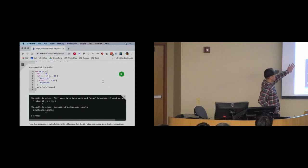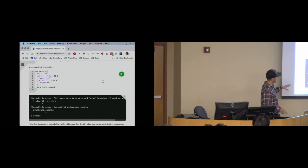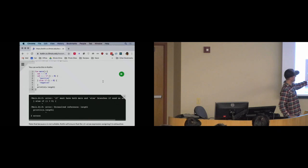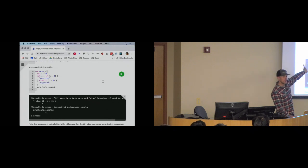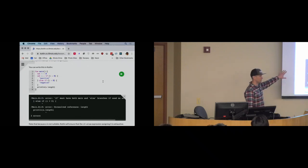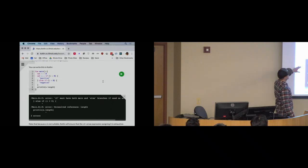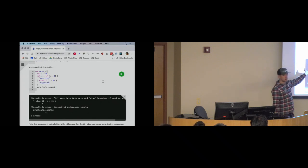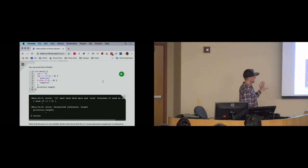One of the cool things in Kotlin for avoiding null is using if as an assignment — but when you do that, it has to be exhaustive. Kotlin is going to force us to make sure that some branch of this if-else assignment is hit. This is a way to force us to be intentional and avoid cases where we might accidentally not hit one of the branches and the value would end up being null.